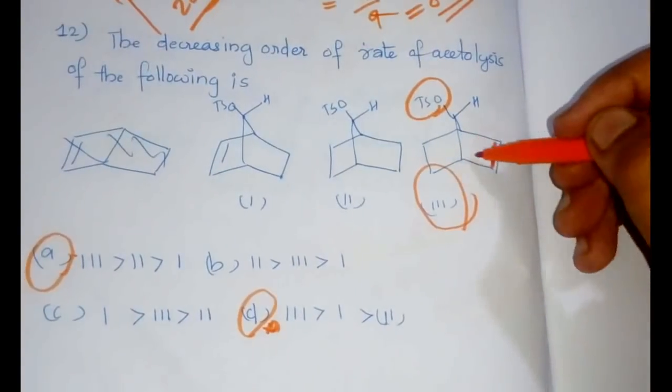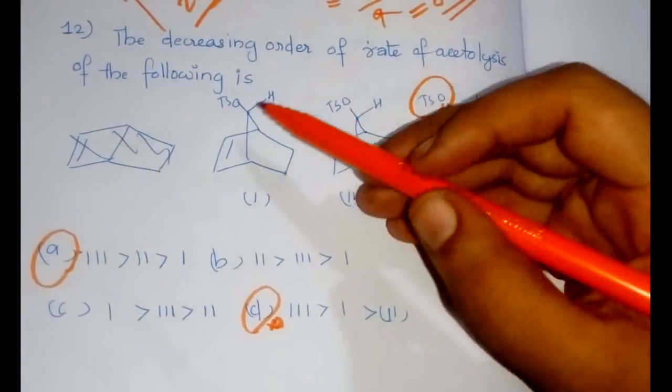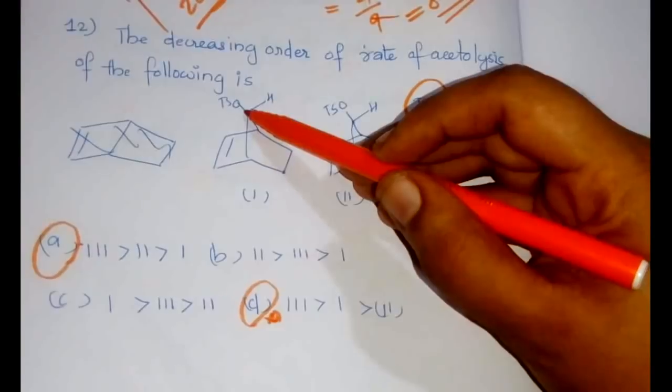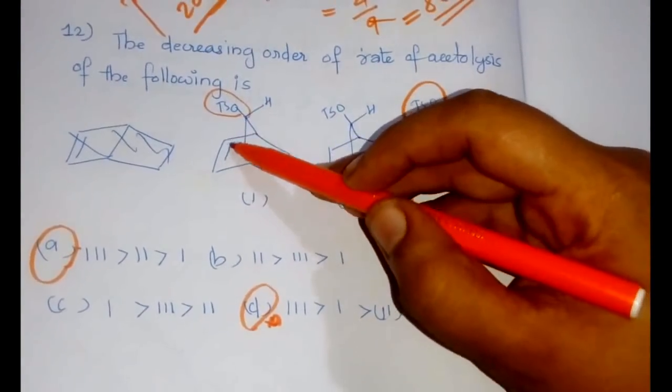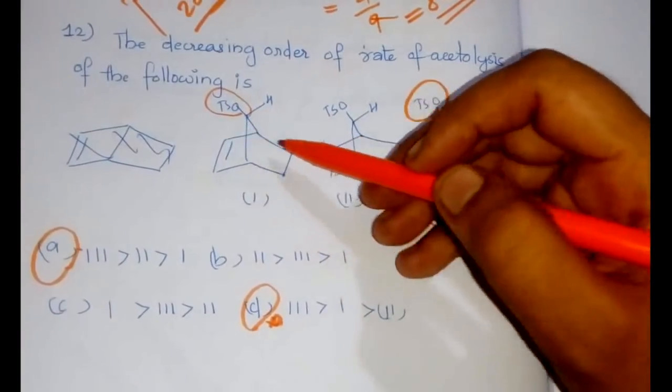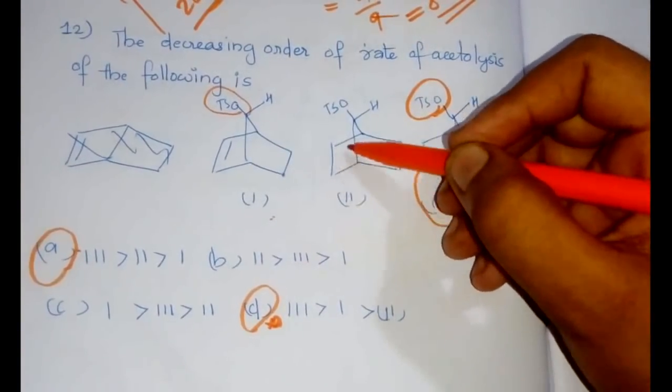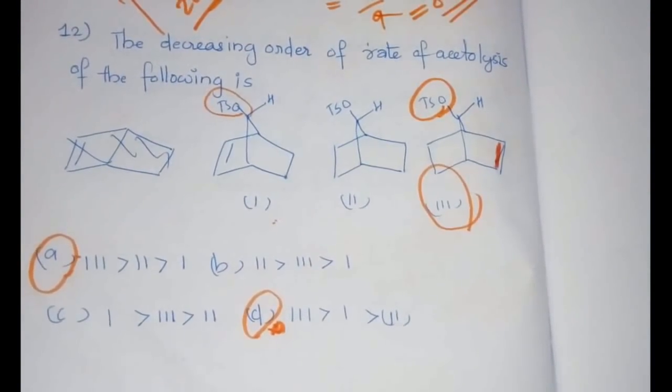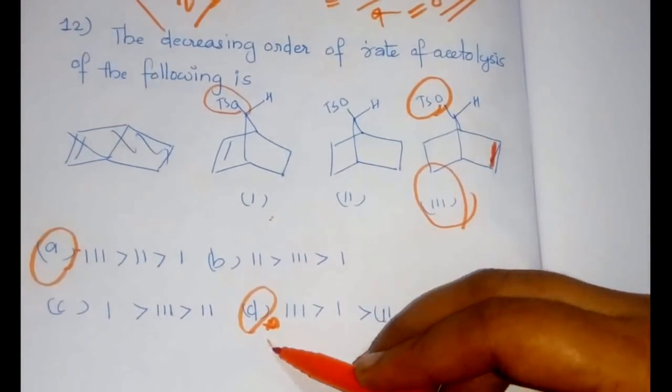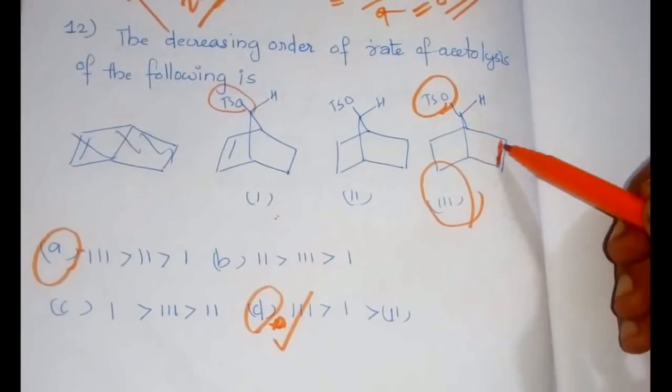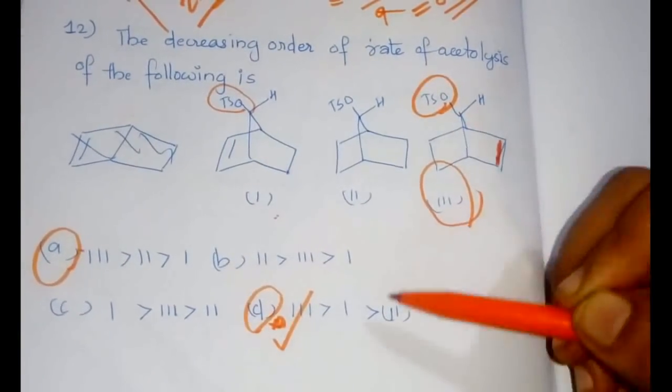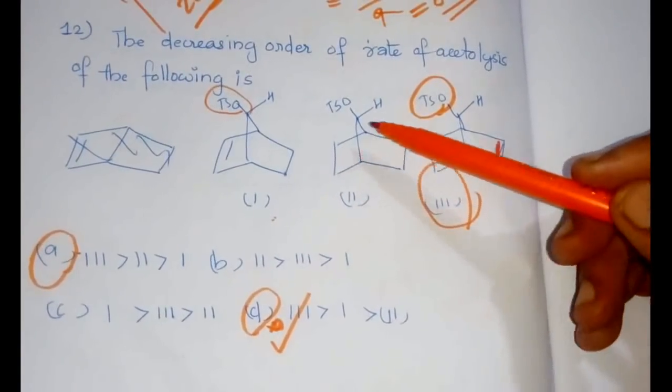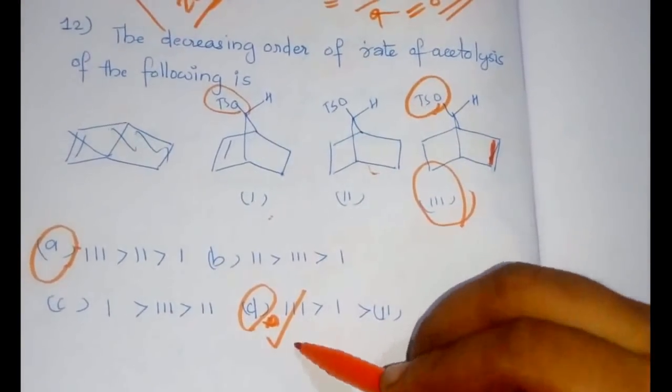Now either option D or option A would be our answer because this is a double bond assisted reaction. The second one has the double bond on the same side of the OTs group but still has assistance from the double bond. The first one has no double bond at all, so definitely the order should be 3 > 1 > 2. The answer is 3 > 1 > 2.